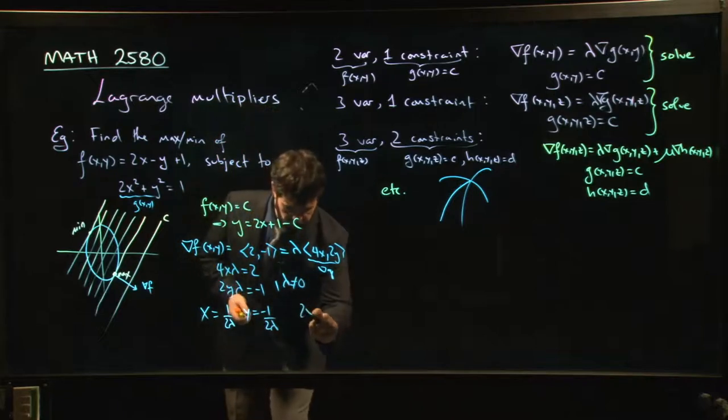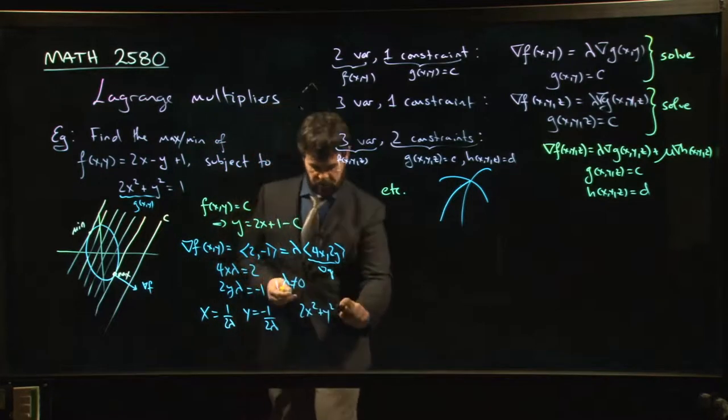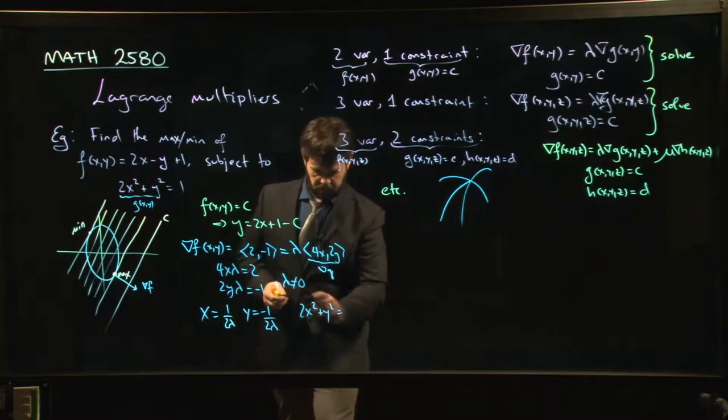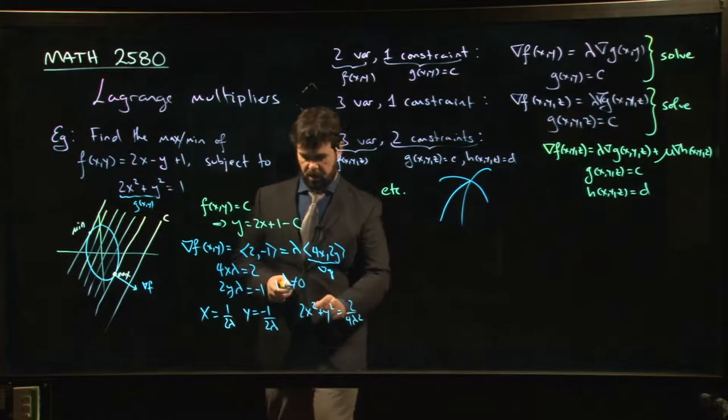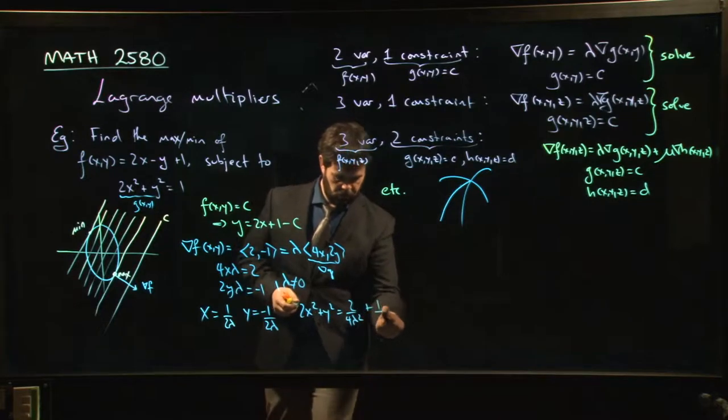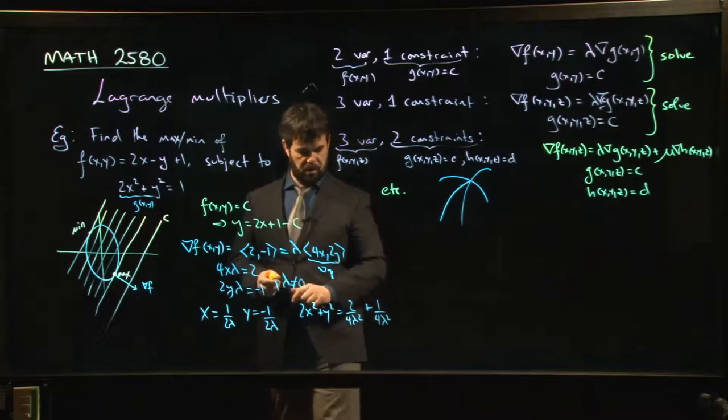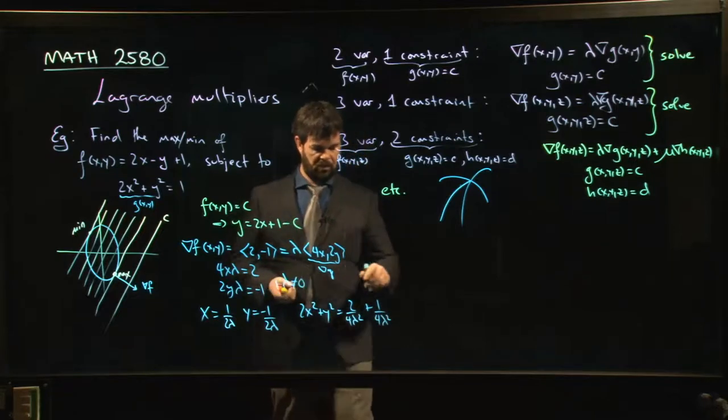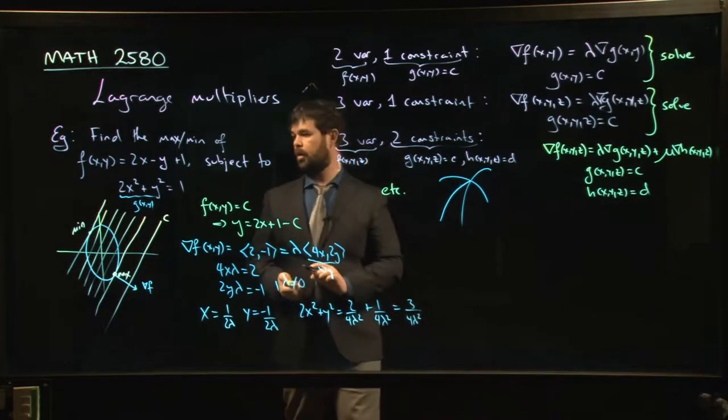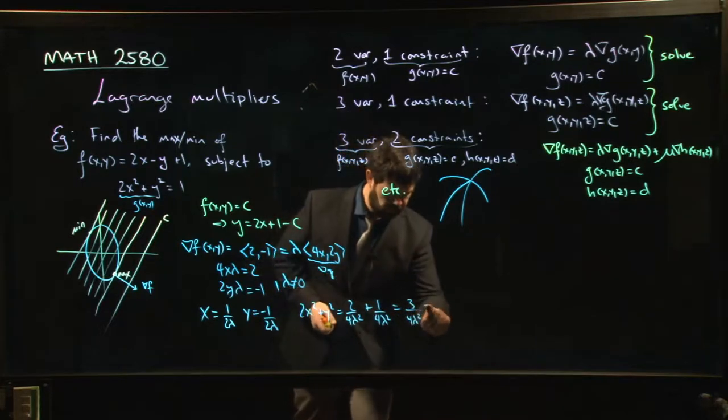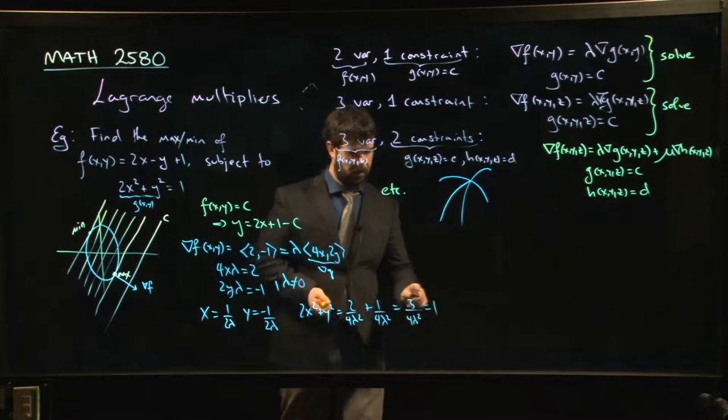So x squared, so 2x squared plus y squared is going to be 2 over 4 lambda squared plus 1 over 4 lambda squared, which is 3 over 4 lambda squared. That needs to be equal to 1.